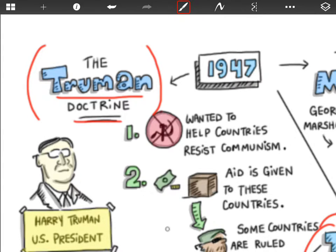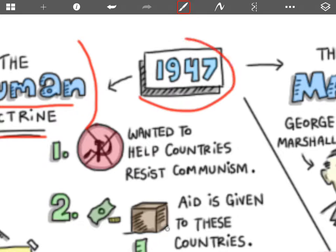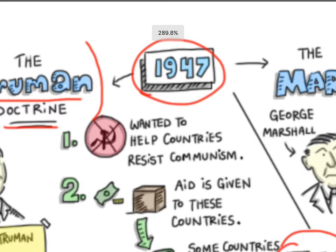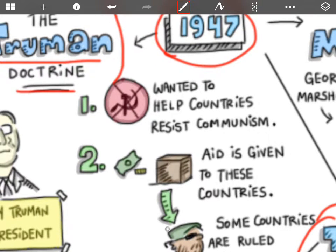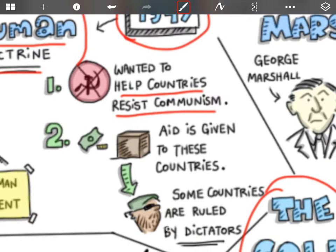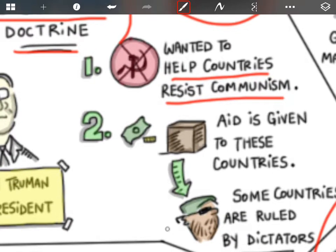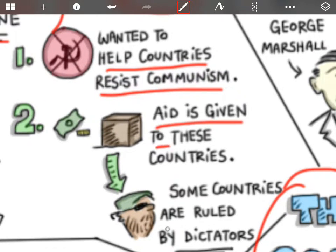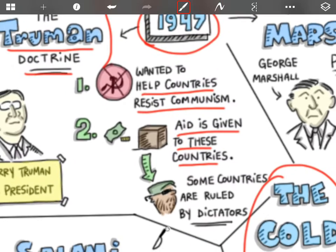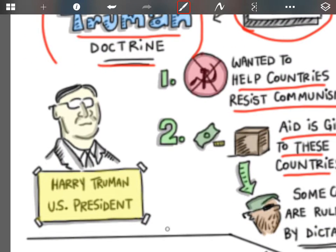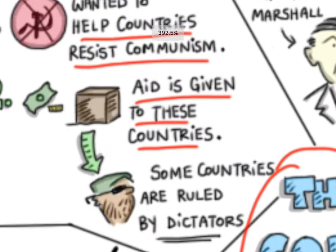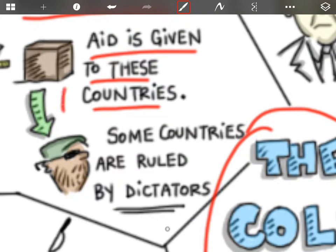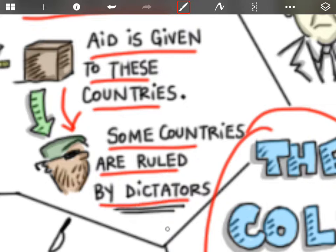Truman comes up with something called the Truman Doctrine, which happens in 1947. What he wanted to do was to help countries resist communism, and his way of doing this is to give aid to these countries — almost like a bribe really. The problem with this is that some countries that receive money from the Truman Doctrine are ruled by dictators, and so aren't very good people to begin with.